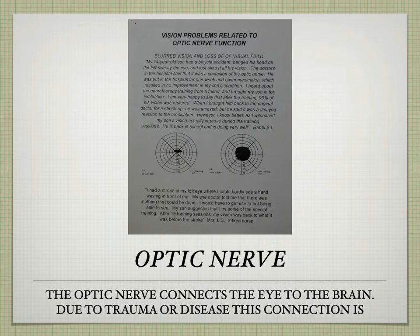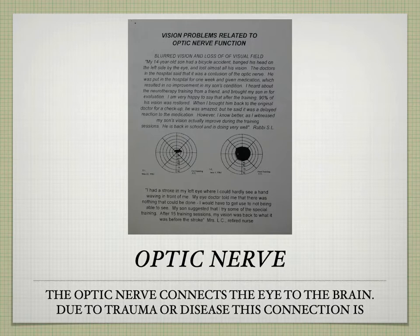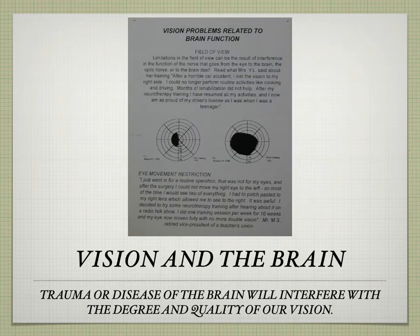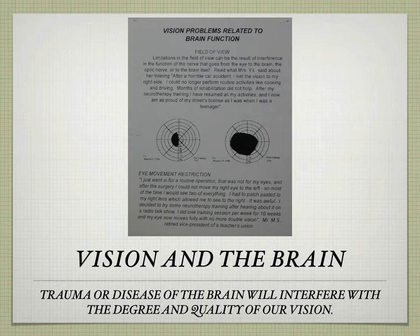The optic nerve connects the eye to the brain, and this graphic illustrates the effects of training on people who have lost function due to damage or trauma to the optic nerve. This reinforces that many physical problems are treatable and we don't give up hope until we've tried every pathway for healing. Similarly, this illustrates someone who had damage to their brain, lost half of their vision in both eyes, and training restored the vision.